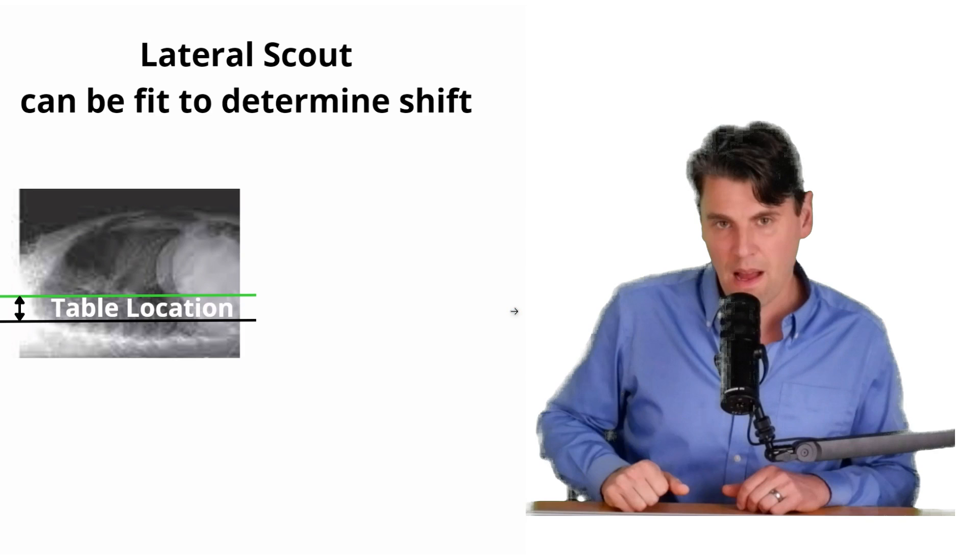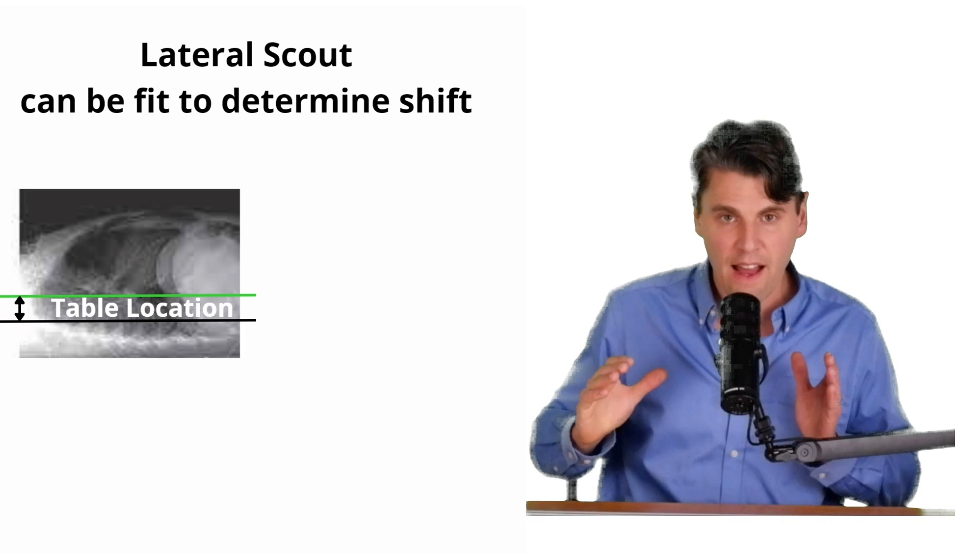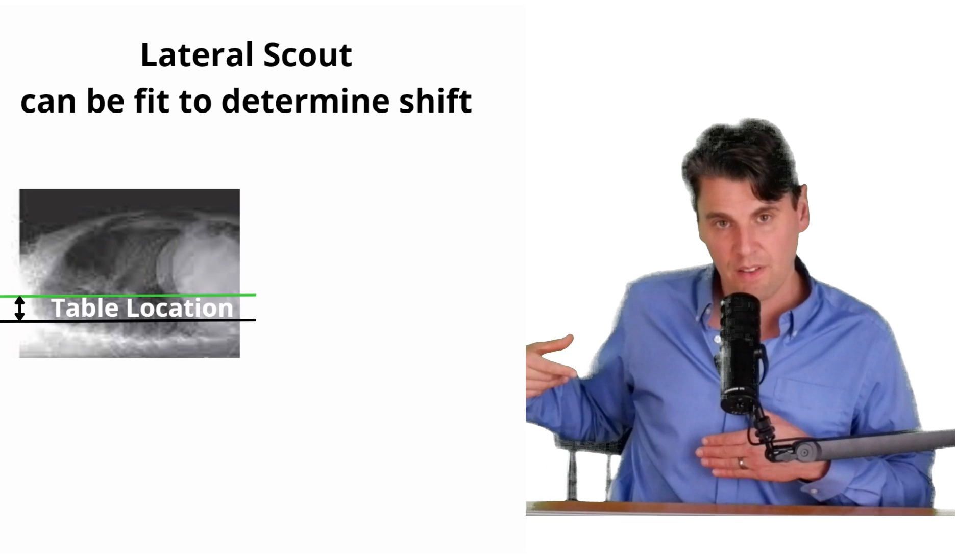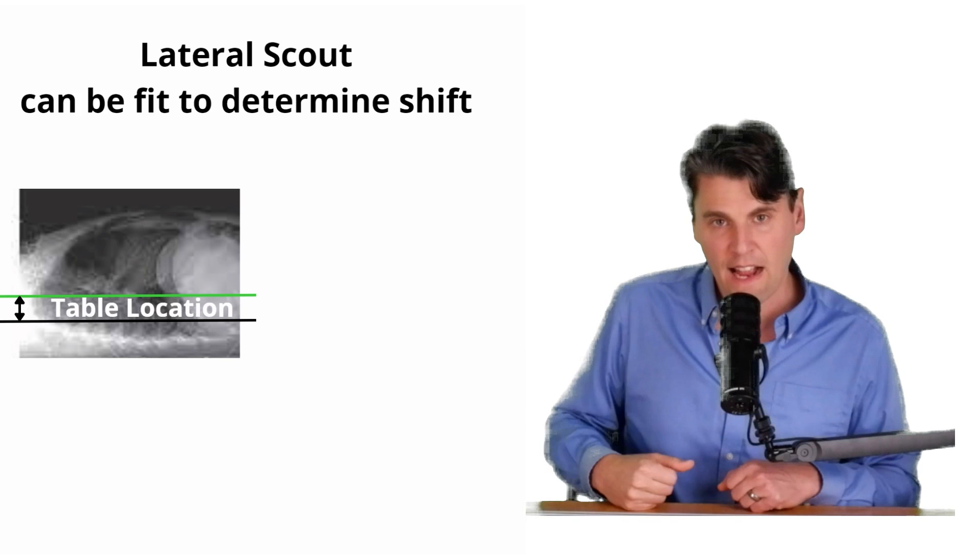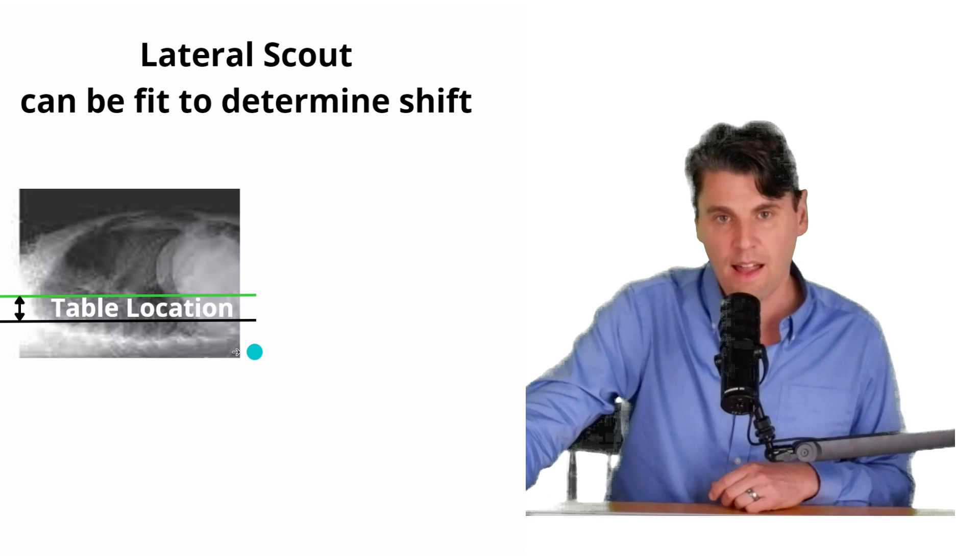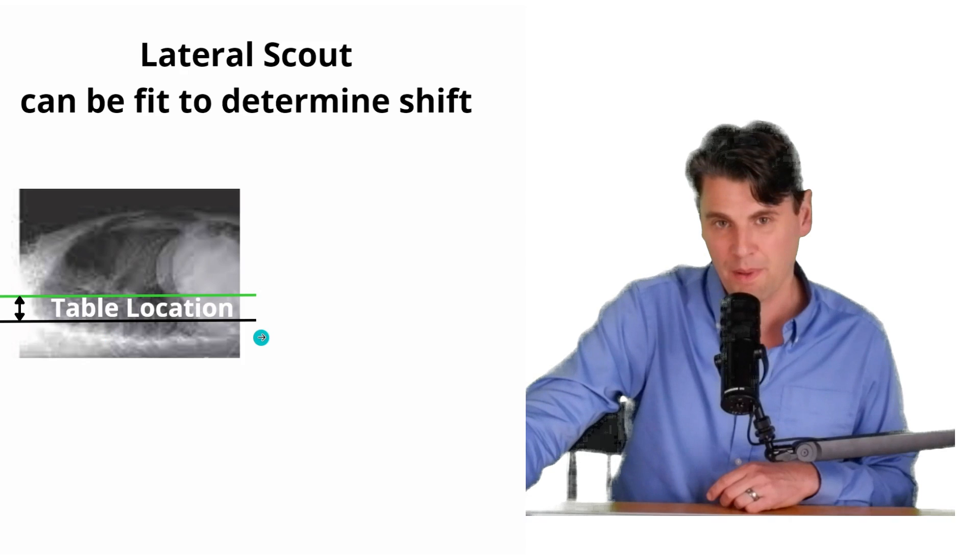So what can you do about this? If you actually look at the lateral scout, you can tell if you're too high or too low based on measurements that you can do in the scout. So now the vendors actually have this as an option on the scanner, where there will be a line on the scanner indicating where the center is and where you want it to be.